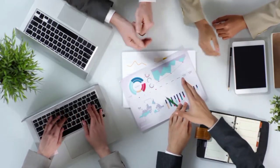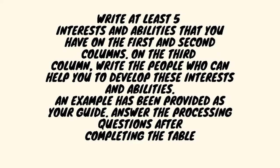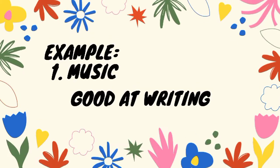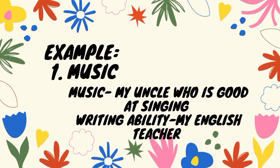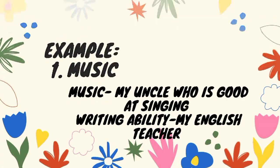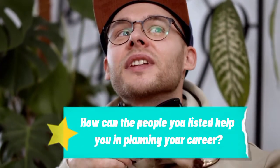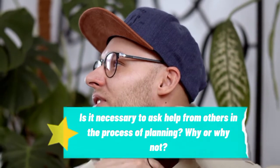Now let's proceed to your Let's Explore This activity, suggested for 25 minutes. Write at least five interests and abilities that you have in the first and second columns. On the third column, write the people who can help you develop these interests and abilities. For example, if you are interested in music and good at writing, your uncle who is interested in music and your English teacher who is good at writing can help you. Processing questions: Do your interests and abilities relate to what you want to be in the future? How can the people you listed help you in planning your career? Is it necessary to ask help from others in the process of planning? Why or why not?